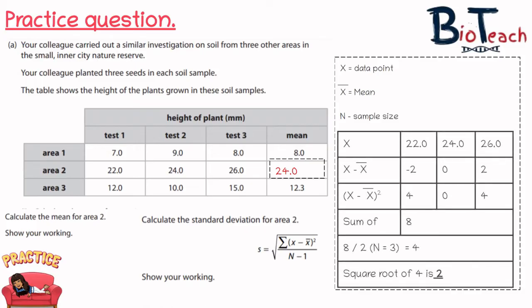The first thing I've done is put my data into a table again. I've put down my x values: 22, 24 and 26 — those are my x values because the question says for area 2 only, and that's how I've been able to create the table.